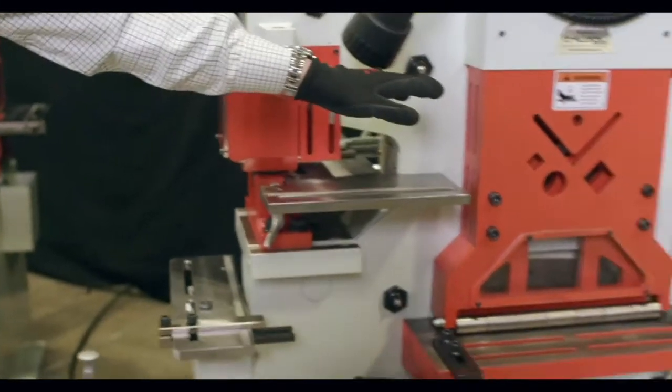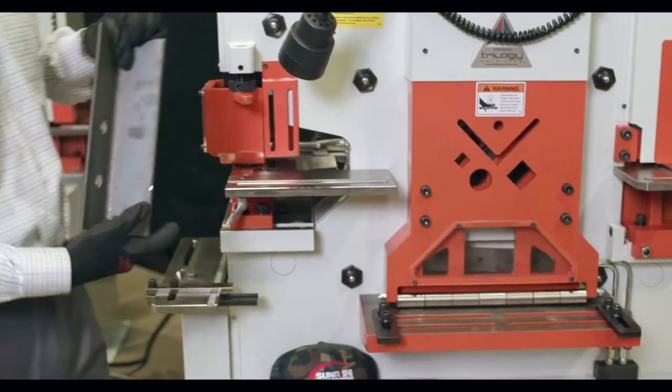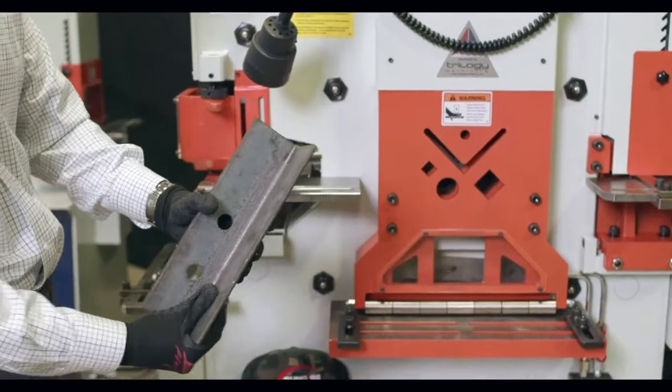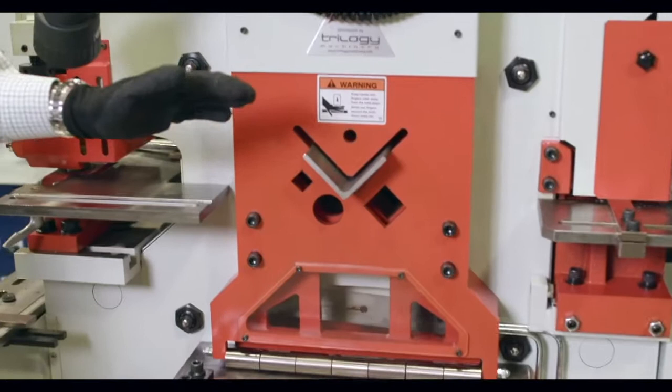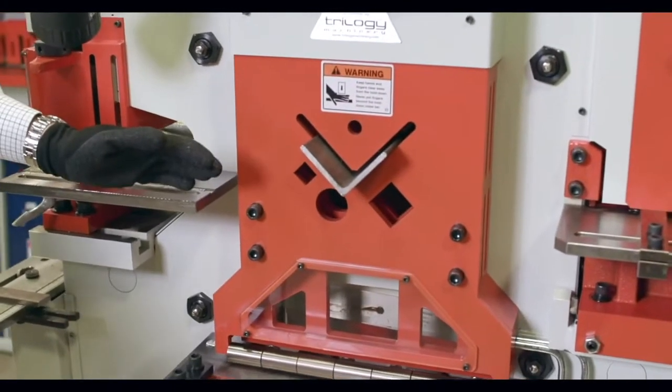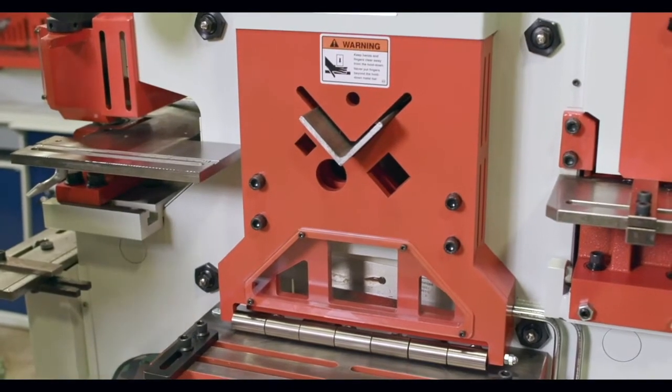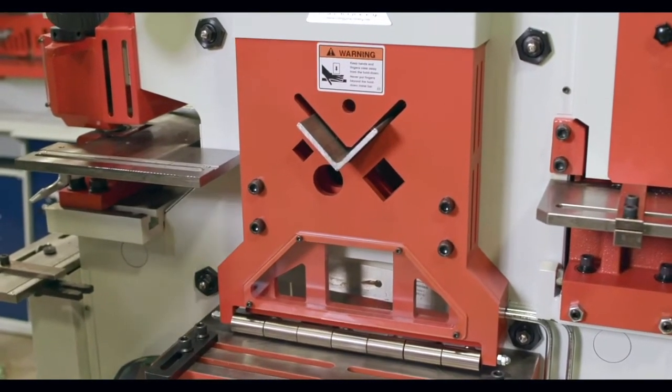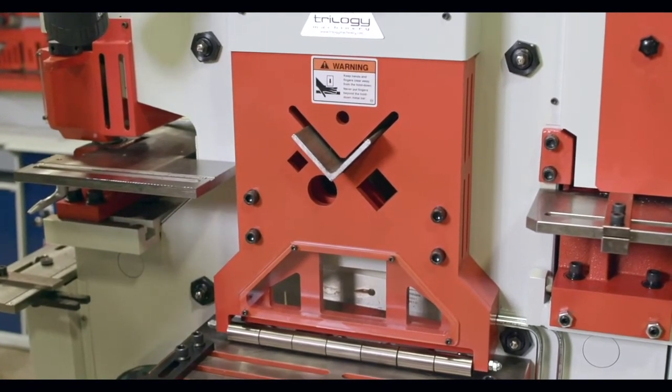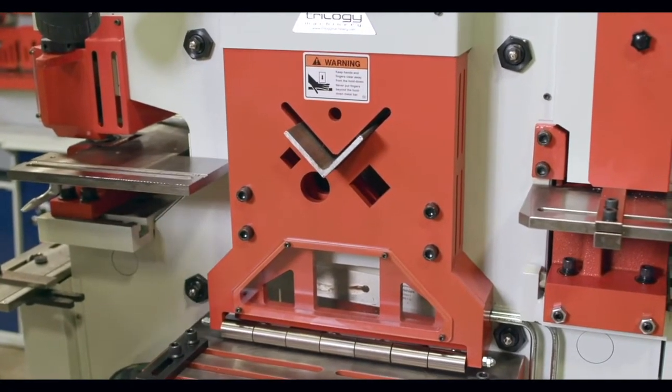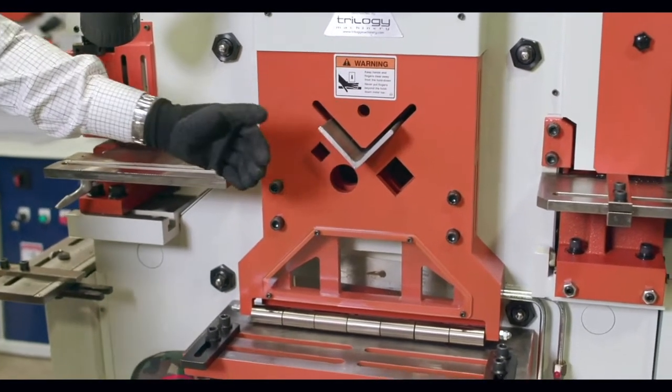On this machine, we also have all of the hydraulic hold downs that are available. So if we take that piece of angle, for example, we load it in our machine. The hydraulic hold down will come down and clamp the angle first and then shear it. This is especially useful if you have a long stick, 20 foot of angle or flat bar that you want to slide in there and then hit that electric back gauge. Every time you hit that electric back gauge, the hydraulic hold down comes down, clamps your material, and then shears it cleanly.